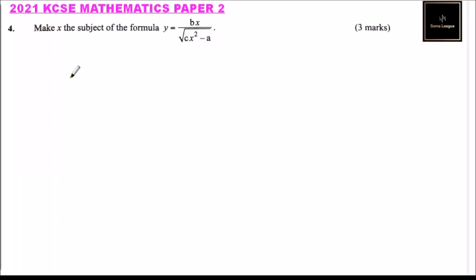This is question number four. Make x the subject of the formula. We have y equals bx divided by the square root of cx squared minus a.